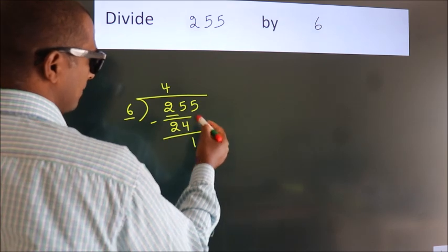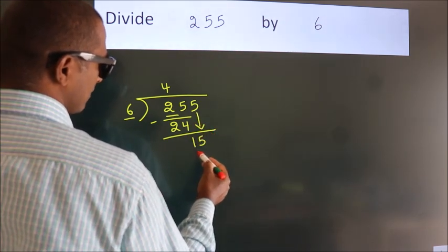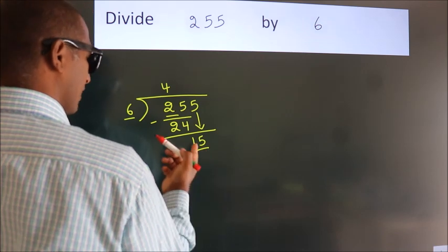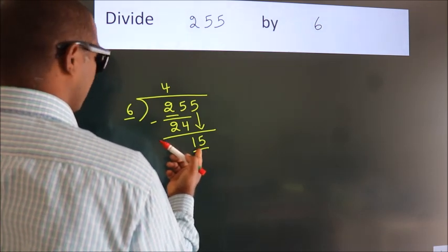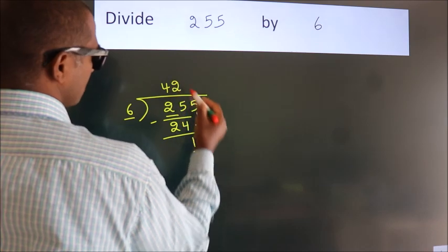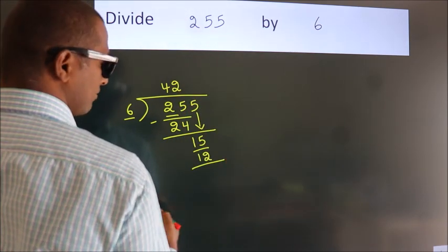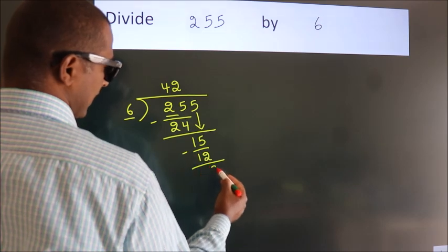After this, bring down the beside number. So, 5 down, so 15. A number close to 15 in 6 table is 6 twos 12. Now we subtract, we get 3.